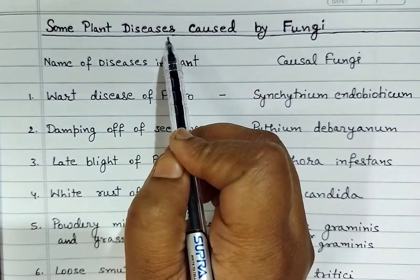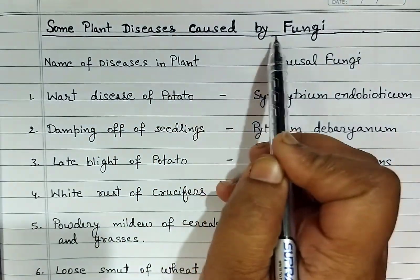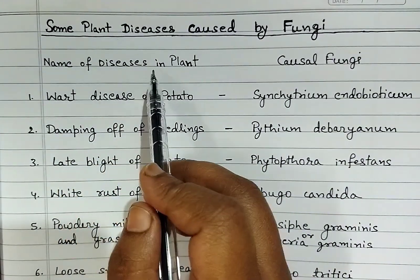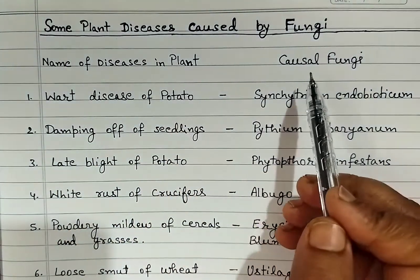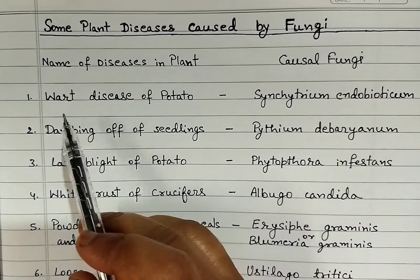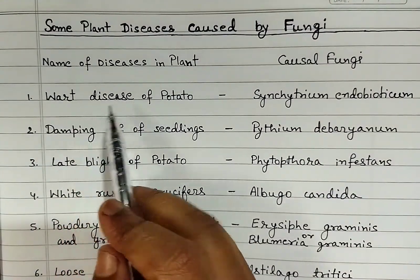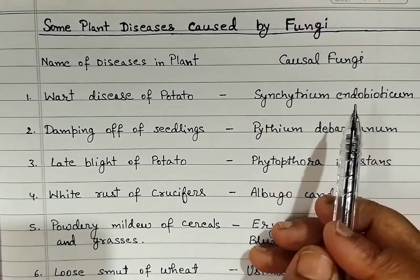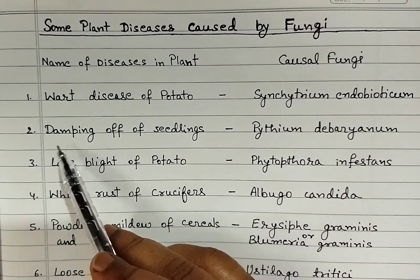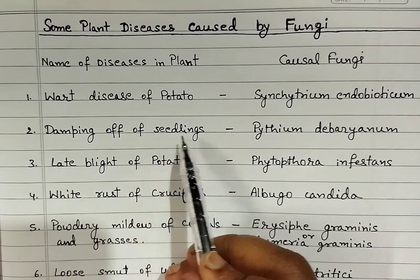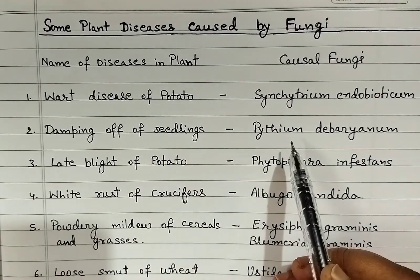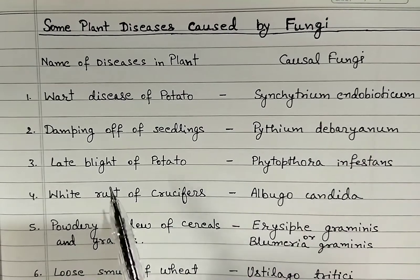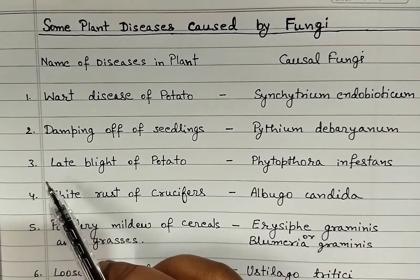Some plant diseases caused by fungi: left side is the name of the disease in plants and right side is the causal fungi. First, wart disease of potato caused by Synchytrium endobioticum. Second, damping off of seedlings caused by Pythium debaryanum. Third, late blight of potato caused by Phytophthora infestans.